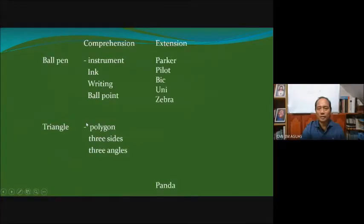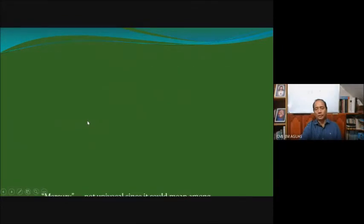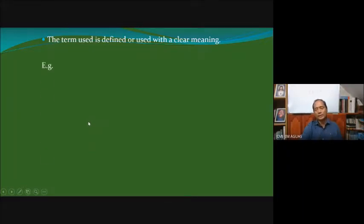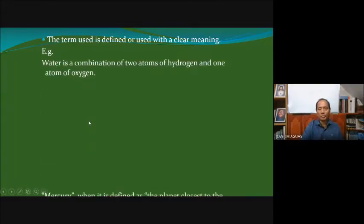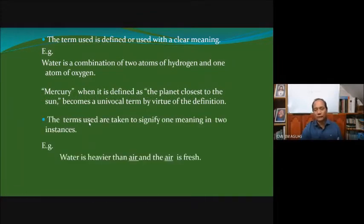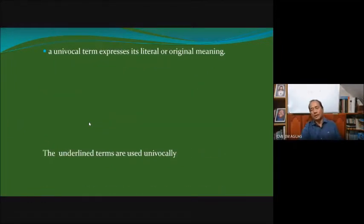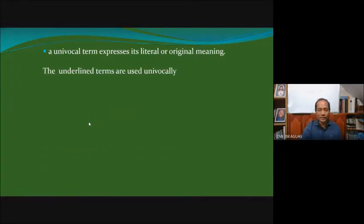We'll finish with the terms and now go to the definition. The definition is the application of how we understand the comprehension of a term. We've said that there are two logical properties of a term: comprehension and extension. The comprehension of the term is actually the definition of the term, while the extension is the application of the term.